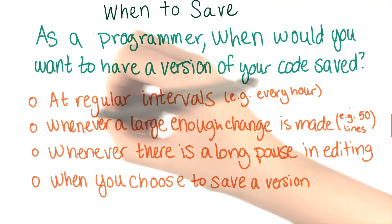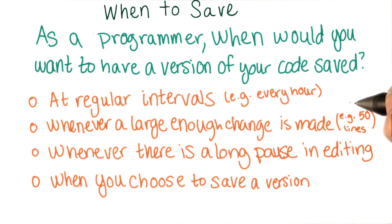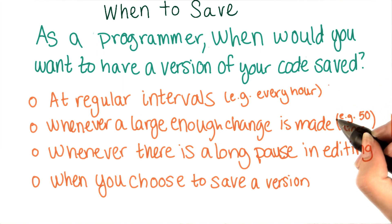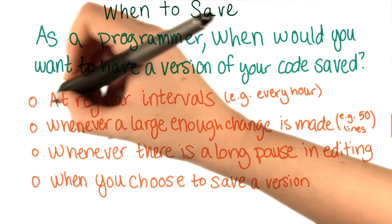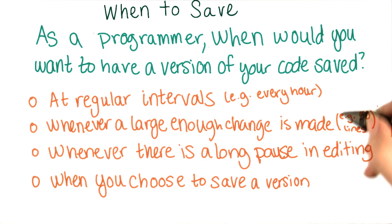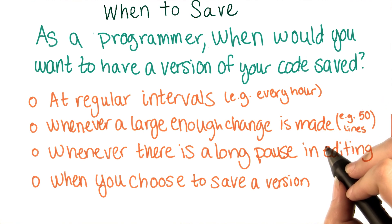Let's look through the options. This one is likely to save way more versions than you really need. But even if you're only actually saving when there's been a change over the course of the hour, you're likely to save at points that don't make a lot of sense. What if you're in the middle of typing a line? Your saved versions might not even compile, much less make sense as a logical checkpoint. This option does have the advantage that if you tend to be forgetful and not save often enough on your own, it can give you more fine-grain detail than you would have had. But otherwise, there's not much reason to make this choice.